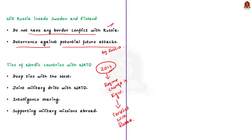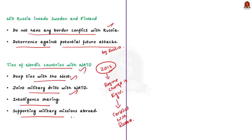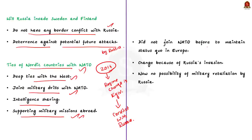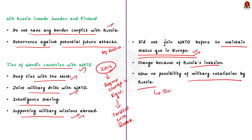Sweden and Finland have already developed deep ties with the West — both are members of the European Union. Their ties with NATO are close; they have held joint military drills, shared intelligence, and supported NATO's military missions abroad. But they did not formally seek membership until now because they did not want to upset the security status quo in Europe and feared Russian retaliation. However, the status quo has been altered by the Russian invasion of Ukraine, and with Russian troops busy in a prolonged war, this opened the door for both countries to apply for NATO membership.